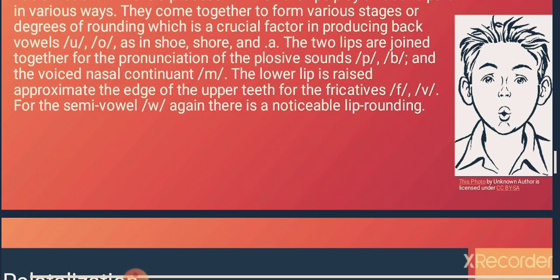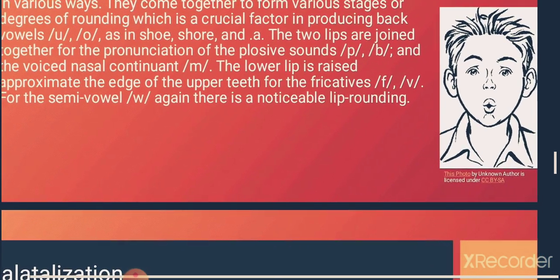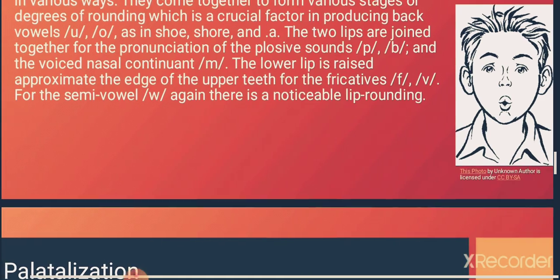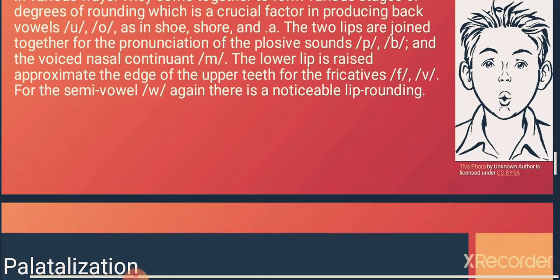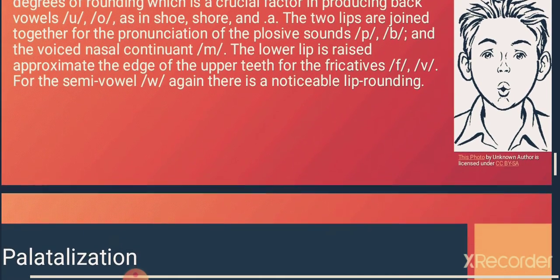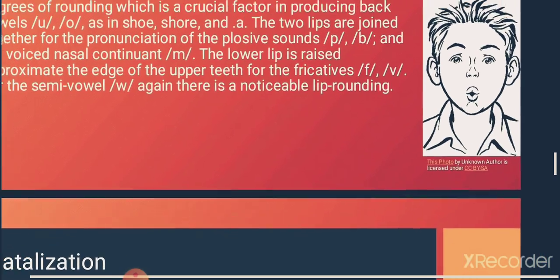The lower lip is raised to approximate the edge of the upper teeth for fricatives such as 'f' and 'v', and for the semi-vowel 'w' there is also a noticeable lip rounding.